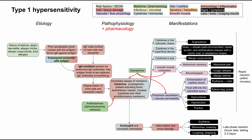A few notes on what might predispose someone to a type 1 hypersensitivity reaction: a history of asthma, atopic dermatitis, allergic rhinitis, allergic conjunctivitis, and food allergies. This makes sense, as these are all IgE- and histamine-mediated disorders, which can predispose you to having this major allergic reaction.